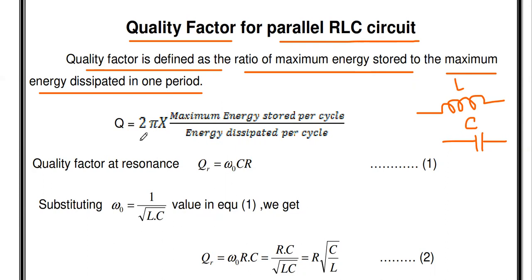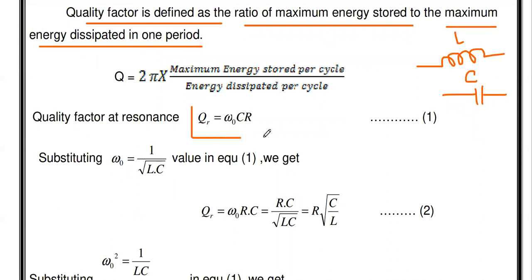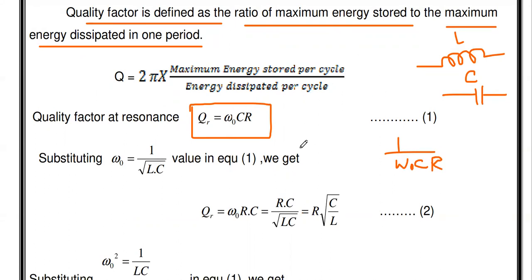The quality factor Q equals 2π — because we are making the calculation for one period — into maximum energy stored per cycle divided by energy dissipated per cycle. The quality factor at resonance for the parallel RLC circuit is ω₀CR. For the series resonant circuit it is 1/(ω₀CR), but for the parallel RLC circuit the quality factor is the inverse of the series RLC circuit, so it is ω₀CR.